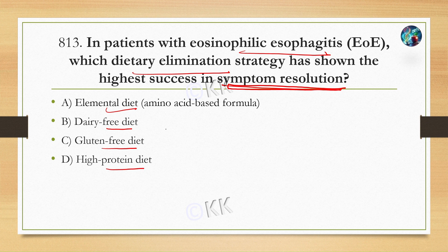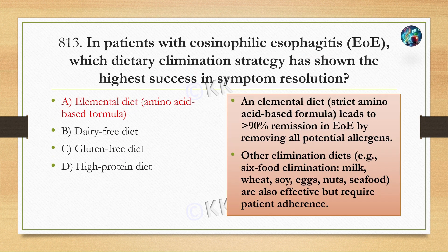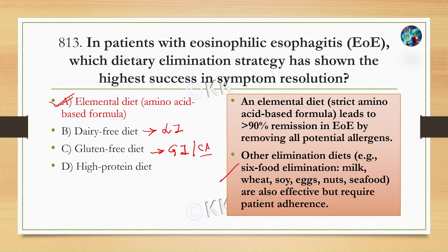The correct option is Option A, elemental diet. This is an amino acid-based formula. Elemental diet leads to over 90% remission of eosinophilic esophagitis by removing all potent allergens. Other elimination diets such as the six-food elimination — milk, soy, egg, wheat, seafood — are also used.